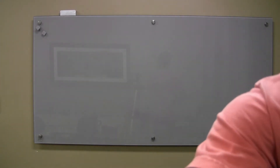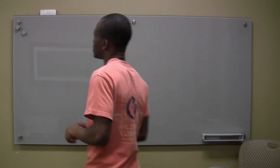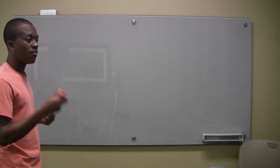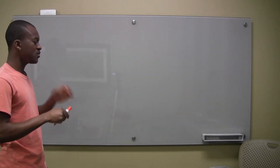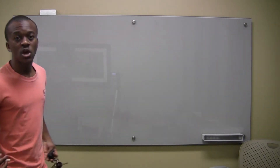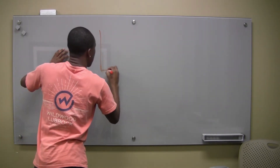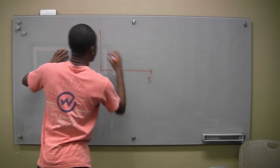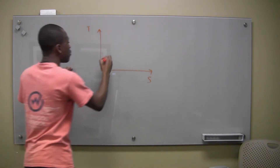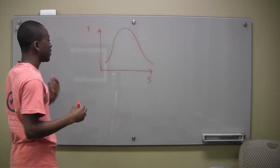Hello everybody. I just wanted to clarify how we're going to draw a TS diagram for a phase-changing substance and an ideal gas when we're dealing with turbines and compressors. So we're going to have our graph with S on the horizontal axis and T on the vertical axis. Let's start with a phase-changing substance — we're obviously going to have our dome on the TS diagram.